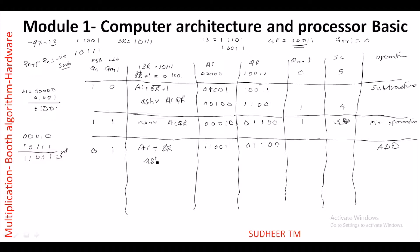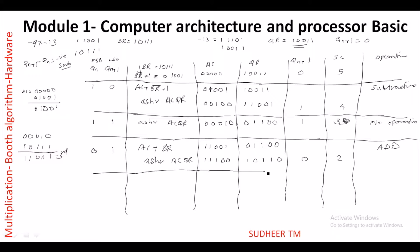After Cycle 3 ASHR, AC = 11100 and QR = 10110, Qn+1 = 0. Cycle 4: Qn = 0, Qn+1 = 0 → Qn+1 − Qn = 0 → no operation. Only ASHR of AC and QR. After the shift, SC is decremented to 1.